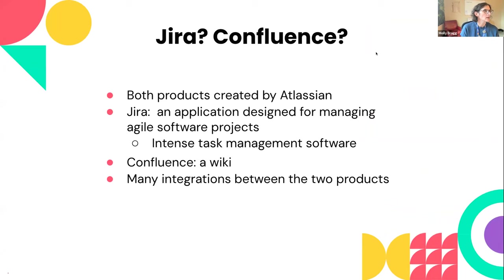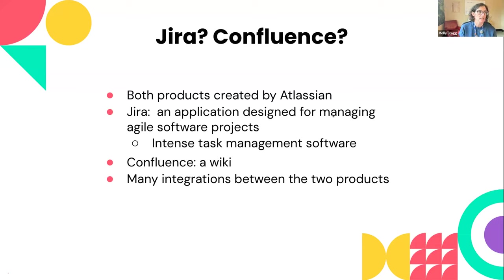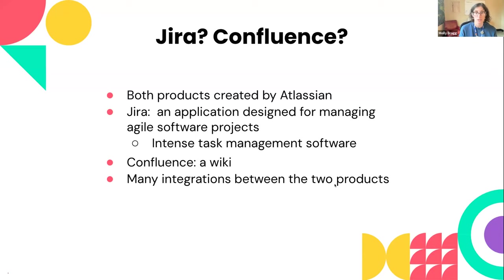First off, what is JIRA and Confluence anyway? These are both products created by a company called Atlassian in Australia. They also own Trello, if you have used Trello in the past. JIRA is an application that was designed specifically for managing agile software development projects, but it's also just a really intense task management tool. Confluence is a wiki, so you can create webpages, share them, and things like that. There are a lot of integrations between the two products.